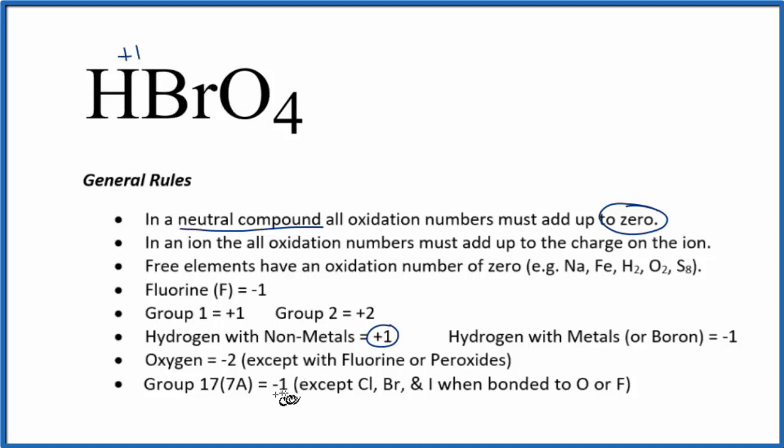Bromine, we think of that as having a minus one oxidation state. It's in group 17 with the halogens. Except when it's bonded to something like oxygen or fluorine. So the bromine bonded to the oxygen, we really don't know what it's going to be. So we're going to say x.